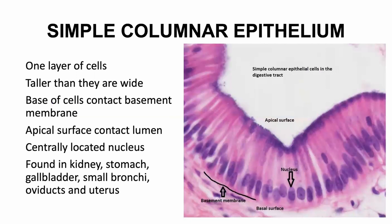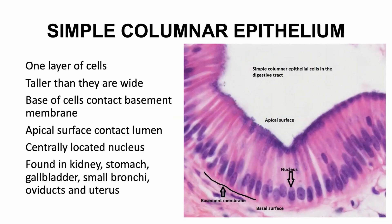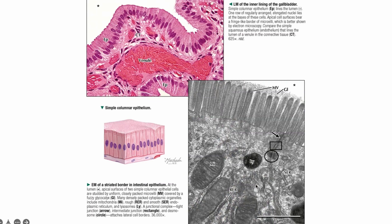Simple columnar: one layer of cells, taller than they are wide — not cuboidal. Simple columnar is the gastrointestinal tract. One layer of cells, taller than wide, contacting a basement membrane. The apical surface of simple columnar epithelium of the gastrointestinal tract has microvilli. You find simple columnar in the kidney, stomach, small intestine, bladder — just remember the gastrointestinal tract. This is an electron micrograph of the striated border in the intestine showing the apical surface and microvilli, with some glycocalyx protein on it, mitochondria, and lysosomes visible.